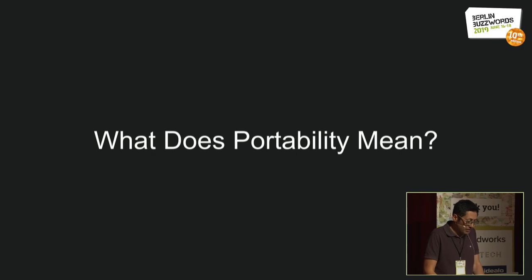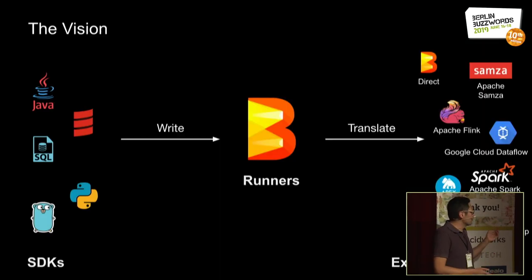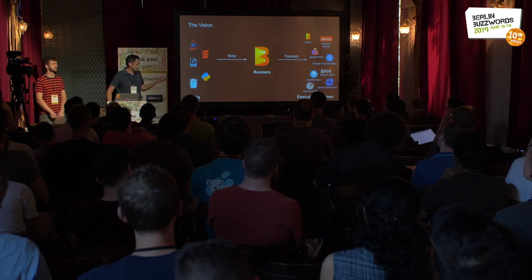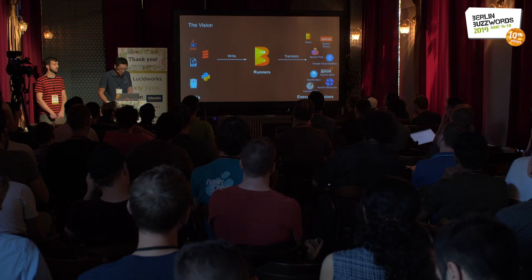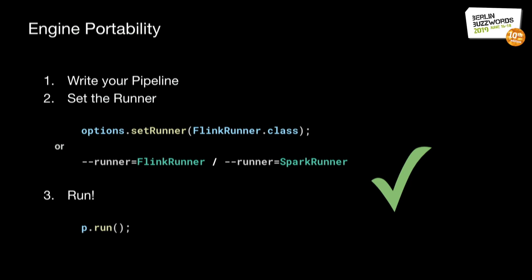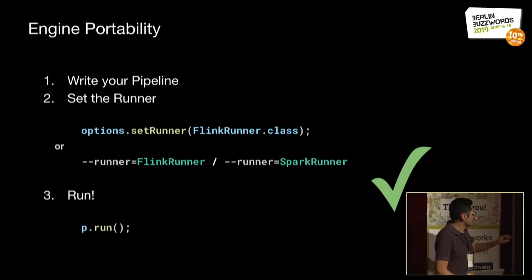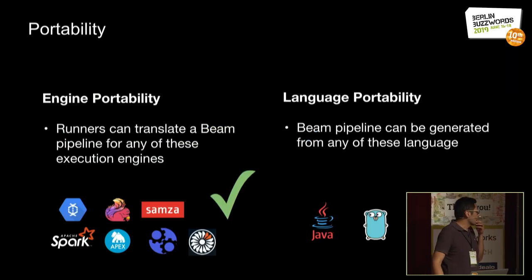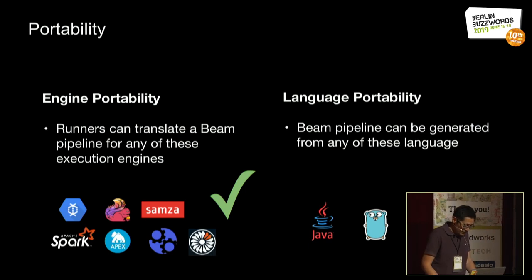What does portability mean? The vision is to run everything in everything — every language that can express the Beam model on every execution system. This has two dimensions: engine portability, where we support all these runners and execution systems, and language portability, where we support all these languages. Today, you write your pipeline in your language, set the runner you want, and it's as simple as switching the runner name from Flink to Spark and running the pipeline. The engine portability part is working well.